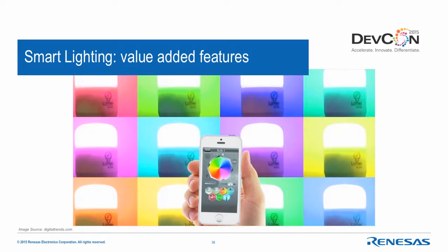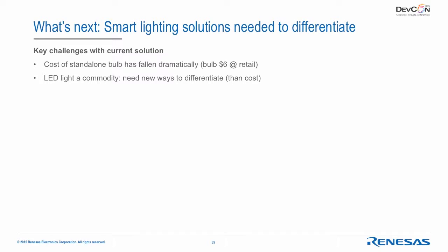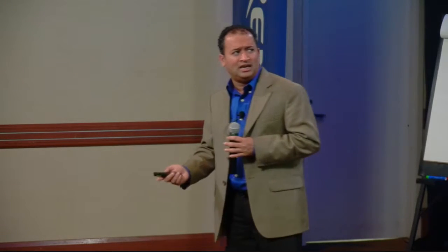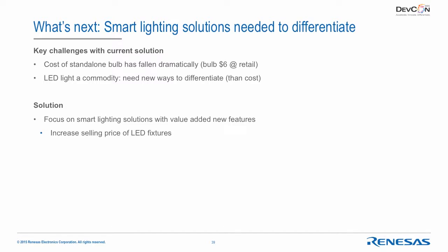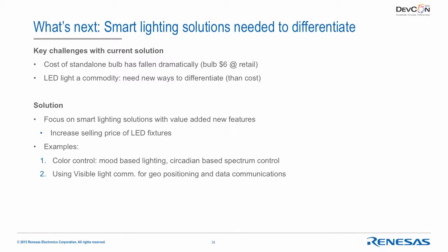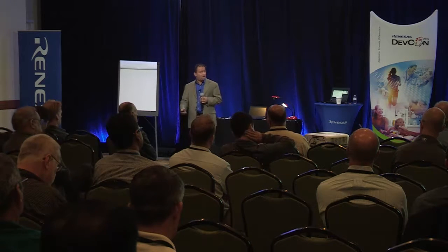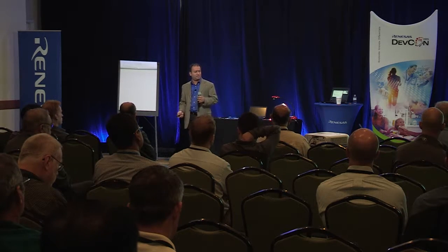Now moving into smart lighting — features coming three to five years out. The key challenge with LED lighting today is it's becoming a commodity; you can buy a bulb for $5–6 at Home Depot. Lighting manufacturers need to add value to differentiate. Smart lighting addresses this through two interesting features: color control (mood-based lighting, circadian spectrum control) and visible light communication (using light for data communication and indoor positioning). We have a demo here to show if time allows.